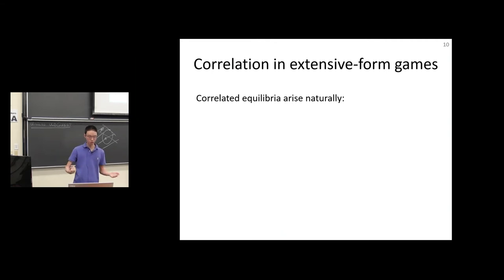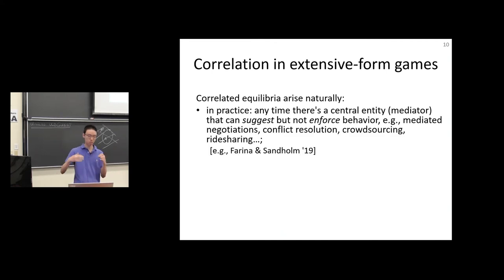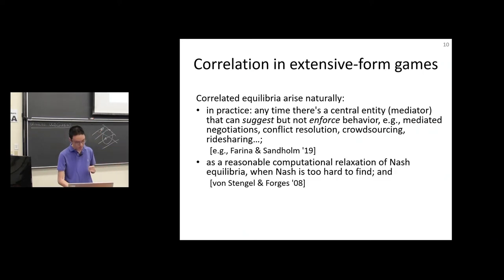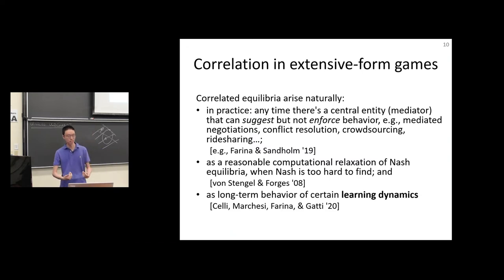Correlated equilibria arise naturally all over the place. In practice, anytime there's a mediator that can suggest but not enforce behavior. For example, mediated negotiations, conflict resolution, crowdsourcing, ride sharing. It's also a reasonable computational relaxation of Nash equilibria when Nash is too hard to find. Recent work shows that it also arises as long-term behavior of certain learning dynamics. It's, as far as we know, the tightest notion that we can get via learning dynamics.